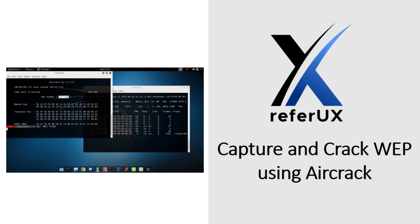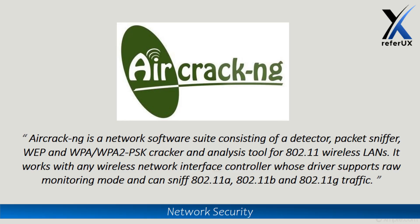Hello guys, welcome to ReferUX. I'm Nimesh. Today we will try to understand how to capture and crack WEP — Wired Equivalent Privacy — using the aircrack facility in Kali Linux. Aircrack-ng is a networking software suite which comes with a decoder as well as a packet sniffer that we can use for WEP and WPA/WPA2-PSK to crack their passwords.